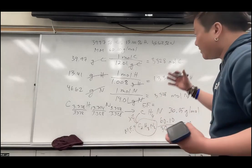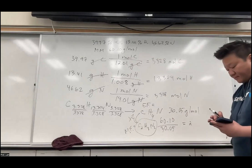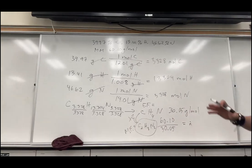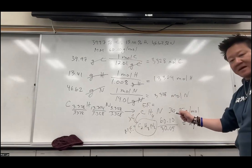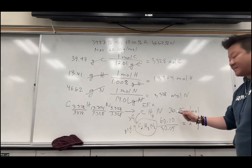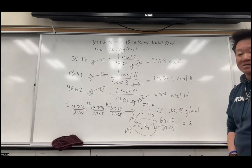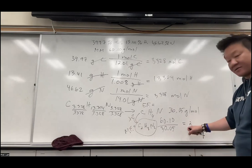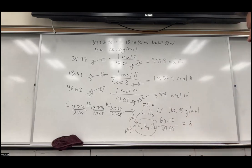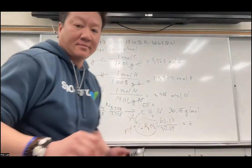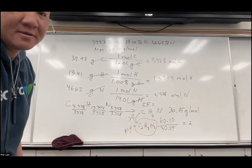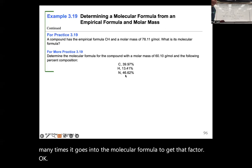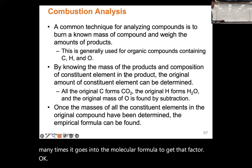So it's pretty straightforward. Do your steps: get the empirical formula, get the mass of the empirical formula, then see how many times it goes into the molecular mass to get the factor.